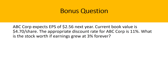Now let's look at our bonus question. ABC Corp expects EPS of $2.56 a share next year. Current book value is $4.70 a share. The appropriate discount rate is 11%. What is the stock worth if earnings grow at 3% forever? This question simply asks you to identify the variables and input them into the RIM formula discussed in this video. Please comment and share your answers below — I'll be happy to reply and help you solve the problem. Please like and subscribe for more videos.